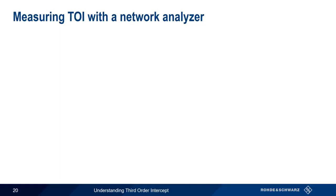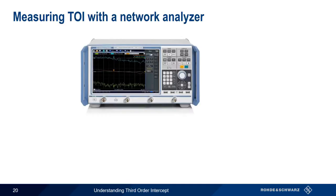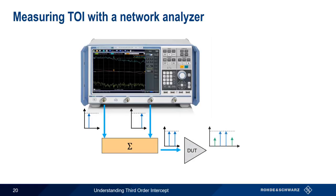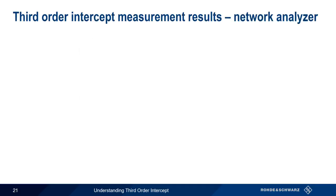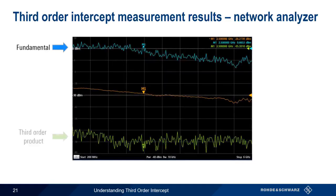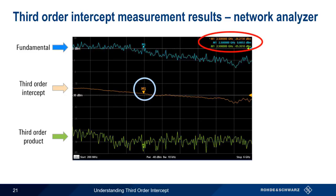We can also measure third order intercept using an instrument called a network analyzer, which combines the functionality of a signal generator and spectrum analyzer. In this case, the network analyzer uses two independent, isolated ports to generate the two tones into the device under test. A separate additional receive port measures the third order products and calculates the IP3. Careful reference plane and power calibration enables network analyzers to deliver highly accurate results, and most network analyzers include built-in source and receive attenuation. Using a network analyzer, we can plot the levels of the fundamental, third order product, and calculated third order intercept as a function of frequency. Markers can be used to obtain values at a given frequency; for example, the calculated third order intercept at 2.5 GHz is minus 28.2738 dBm. We can see in this example that third order intercept, and hence linearity, are decreasing as frequency increases.